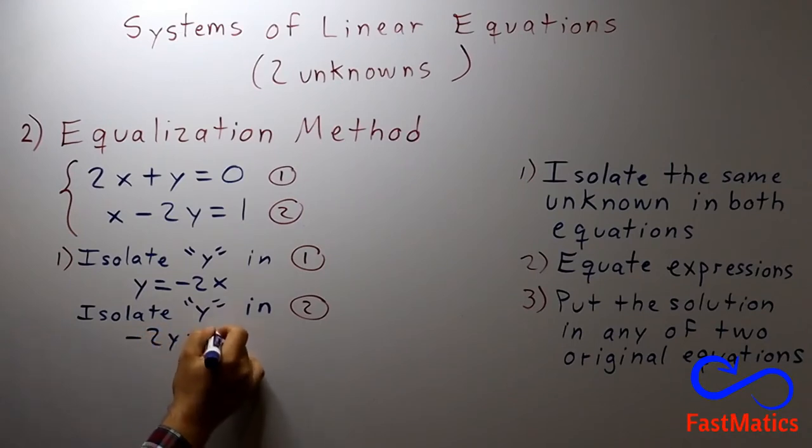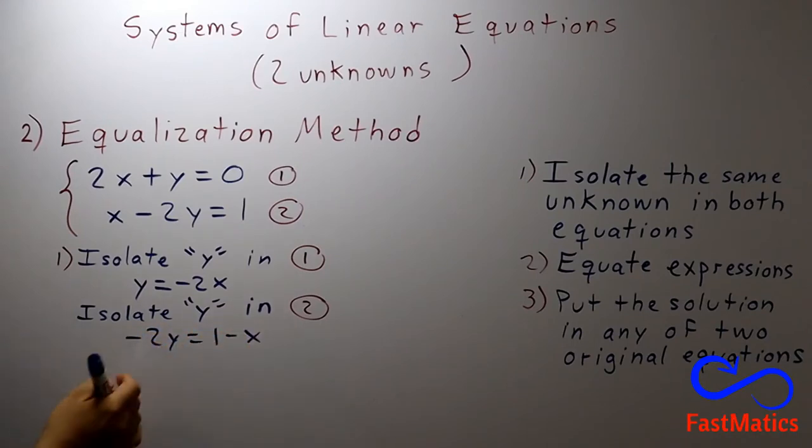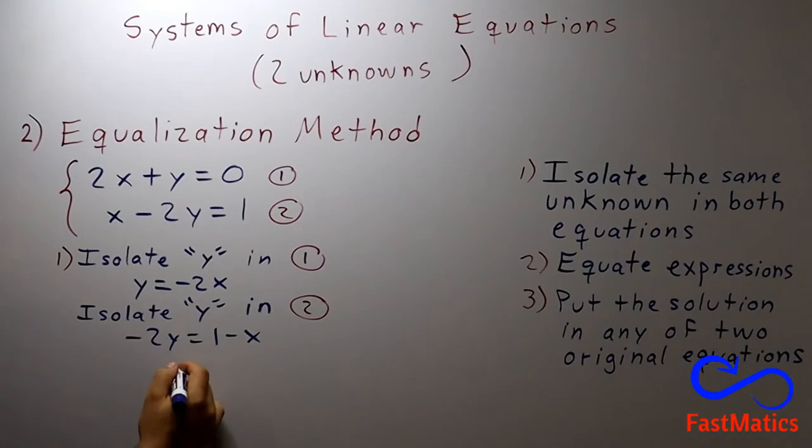Negative 2y equals 1 minus x. And after that I will pass the negative 2 to the other side dividing. And that's it. Step 2.